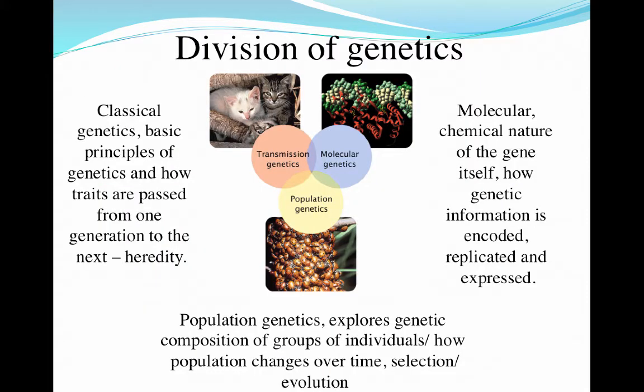So genetics is split up into three major areas or divisions: transmission, molecular, and population. Transmission genetics is classic genetics — how genes get from one generation to the next. Molecular genetics involves studying the molecular and chemical nature of the gene, how that information is coded, replicated, and then expressed as protein. And finally, population genetics is the statistical analysis of genes, looking at populations, the incidence of alleles, disease, etc.